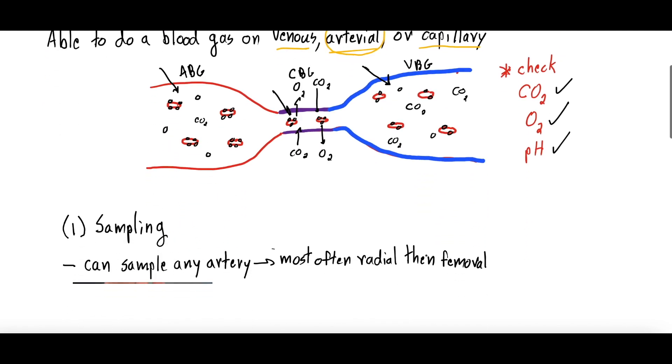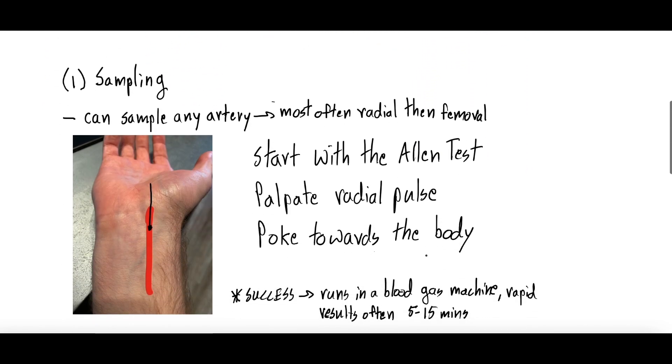So sampling - how do we sample, how do we get an ABG? Well, you can actually sample any artery theoretically, but most often the arteries you're sampling are the radial artery, which runs in the wrist, or the femoral artery, which runs in the groin. Far and away the radial artery is the artery of choice. So how do you do it? Well, you start with something called the Allen's test, and the Allen's test is to assess for adequate collateral flow.